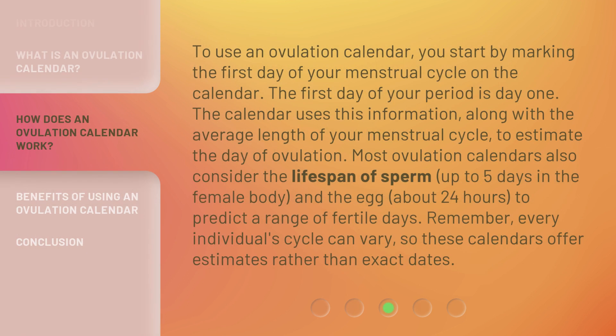To use an ovulation calendar, you start by marking the first day of your menstrual cycle on the calendar — the first day of your period is day one. The calendar uses this information, along with the average length of your menstrual cycle, to estimate the day of ovulation. Most ovulation calendars also consider the lifespan of sperm, up to five days in the female body, and the egg, about 24 hours, to predict a range of fertile days. Remember, every individual cycle can vary, so these calendars offer estimates rather than exact dates.